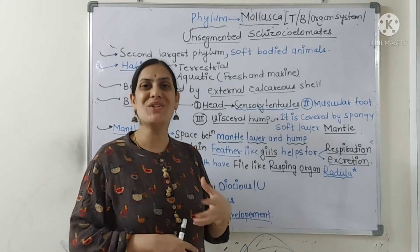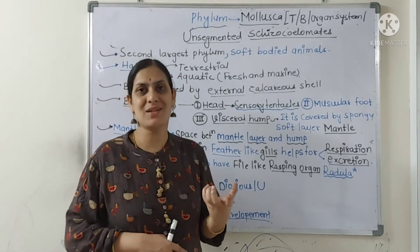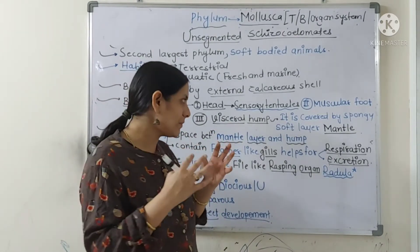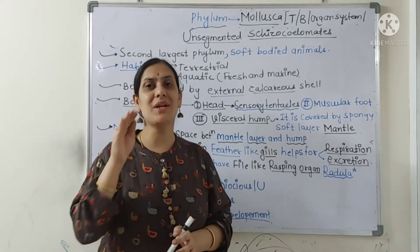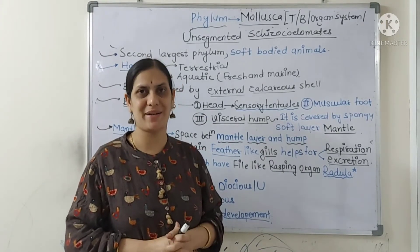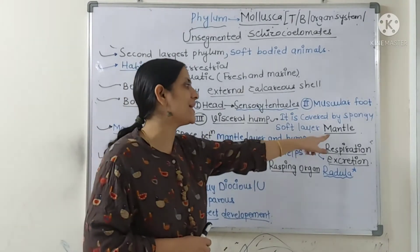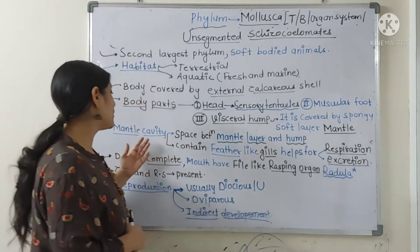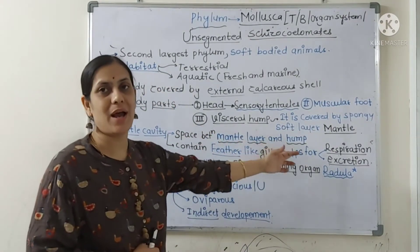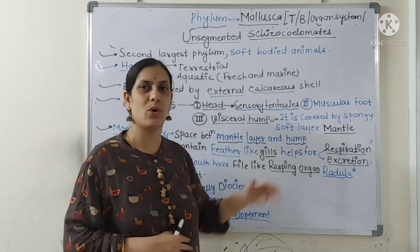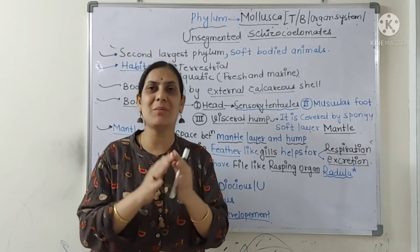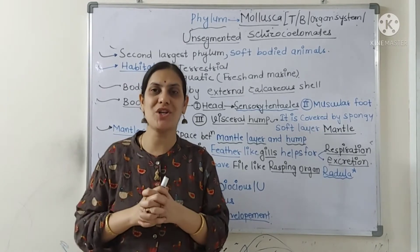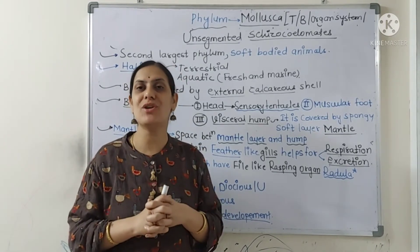The third part is the visceral hump, also called the visceral mass, which contains all the internal organs inside it. Whatever this visceral hump contains, it is covered by one spongy and soft layer. That spongy and soft layer is known as the mantle layer. The visceral hump is nothing but the mass of internal organs, and it is covered by the mantle layer.